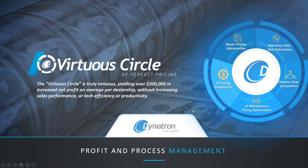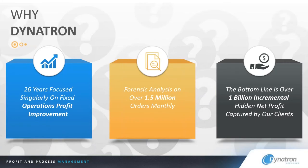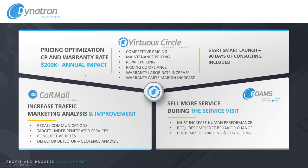As a quick background, we've been in business over 26 years developing and refining solutions for the automotive fixed operations industry. We currently operate with over 2,300 active clients all over the country, including large groups like Penske, Hendrick, AutoNation, and Berkshire Hathaway, just to name a few. We've been focused on fixed operations improvements throughout that 26-plus years and currently analyze over 1.5 million repair orders a month. The bottom line is we've added over a billion dollars in incremental hidden net profit captured by our clients over the years.